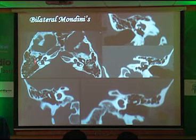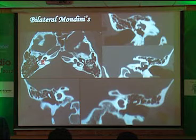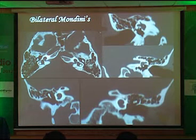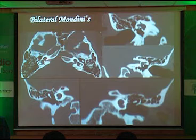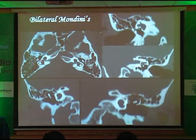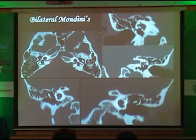Bilateral Mondini: dilatation of the vestibule and loss of normal architecture of the cochlea — beautifully seen on both sides. Ice cream cone normal, ossicles normal, IAMs normal.